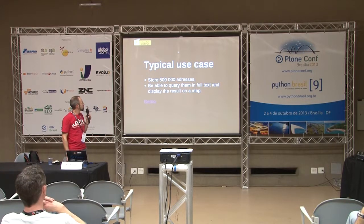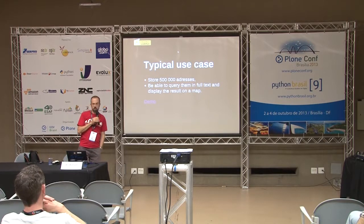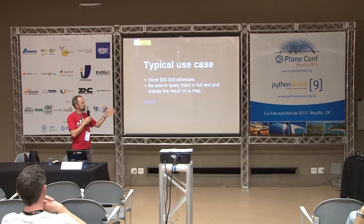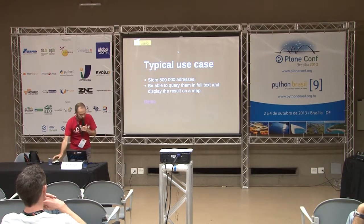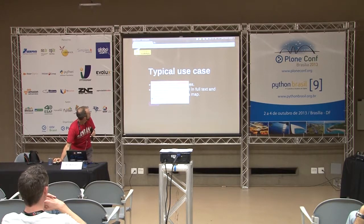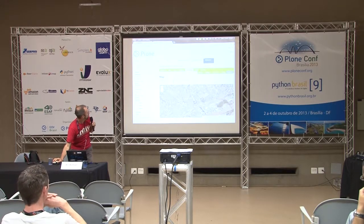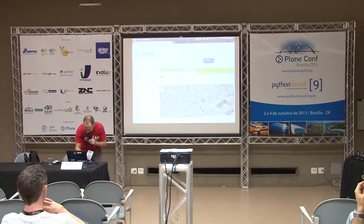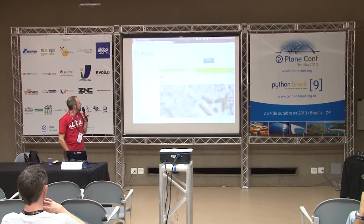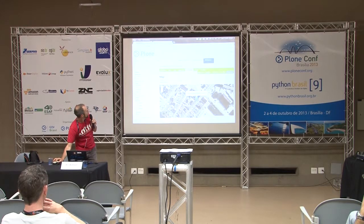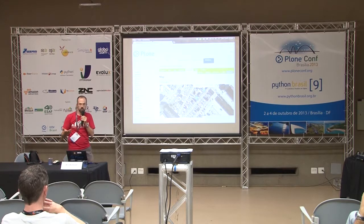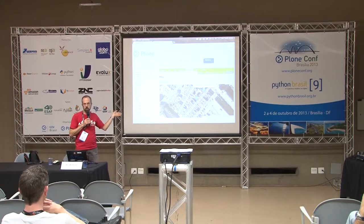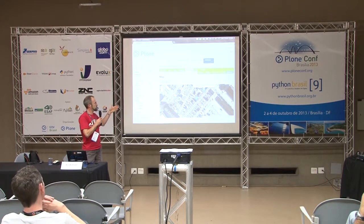Typical use case: I needed to store 500,000 addresses for a sub-part of France, and to be able to query them in full text — just like when you type an address in Google Maps — and to display the result on a map. So let's see the demo. Here is my map. I enter any address, the city of Nantes for example, and I get the result. It's full-text indexed, I can search any address in the street, and it's really fast. Half a million addresses — try to do that with Archetypes or Dexterity and you're going to crash your Plone site. It's really responsive.